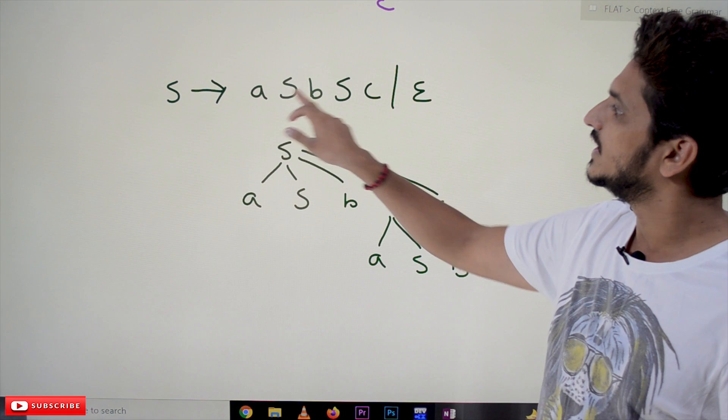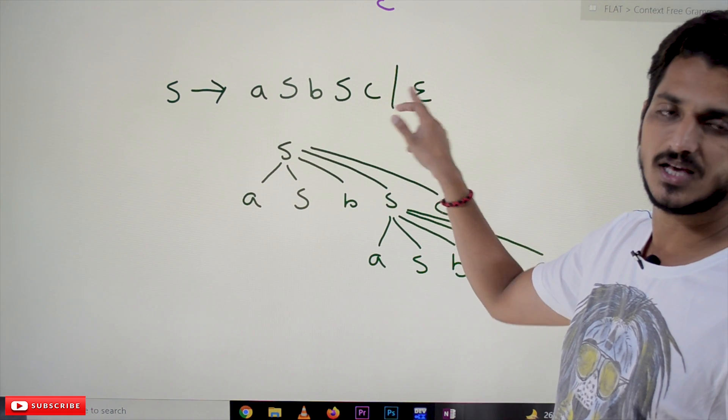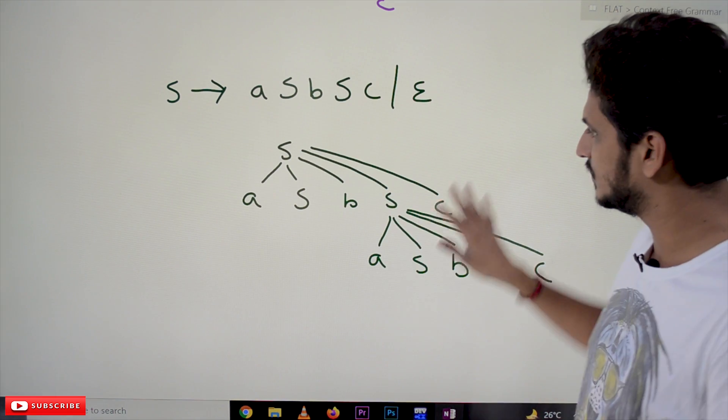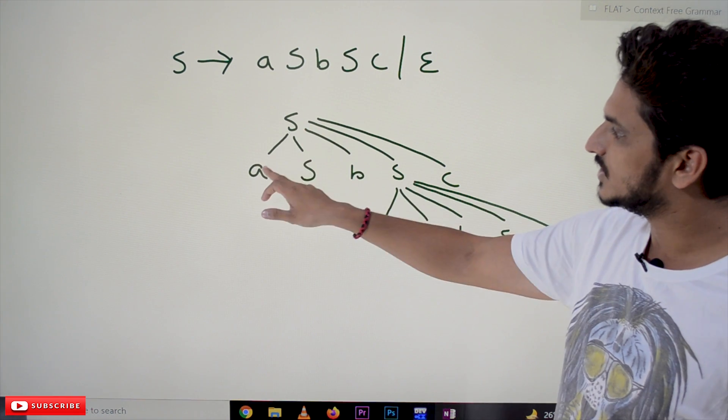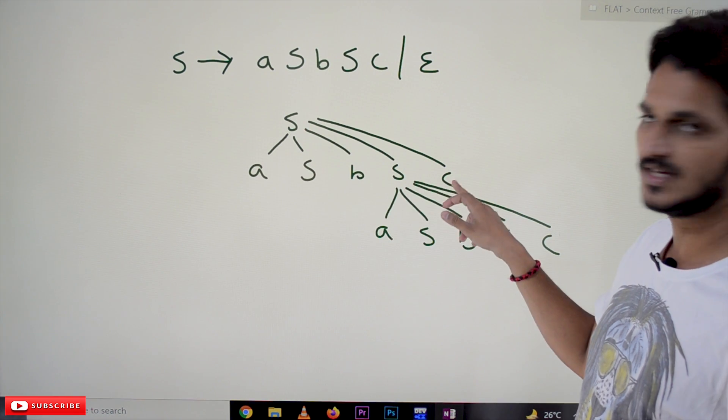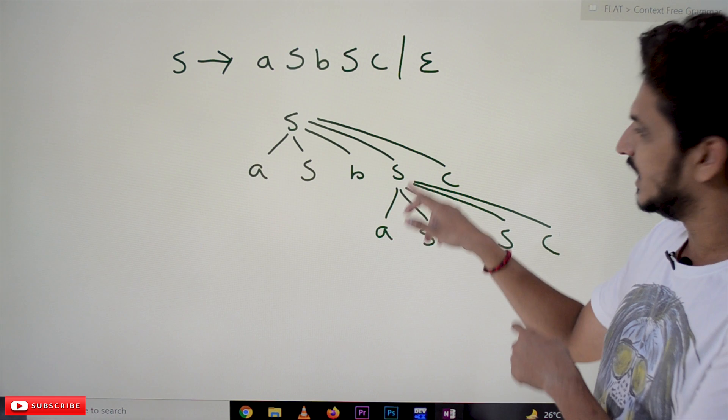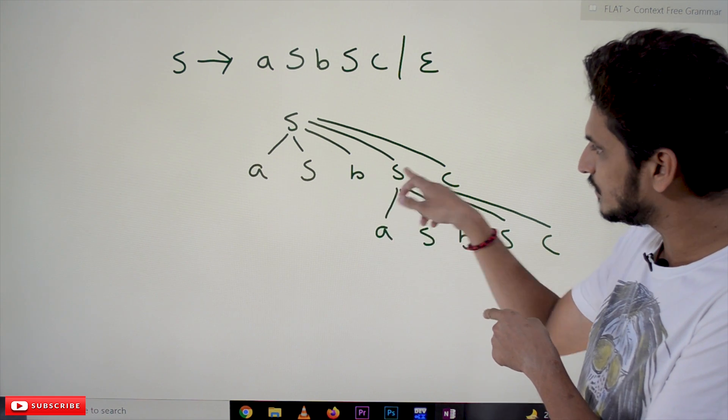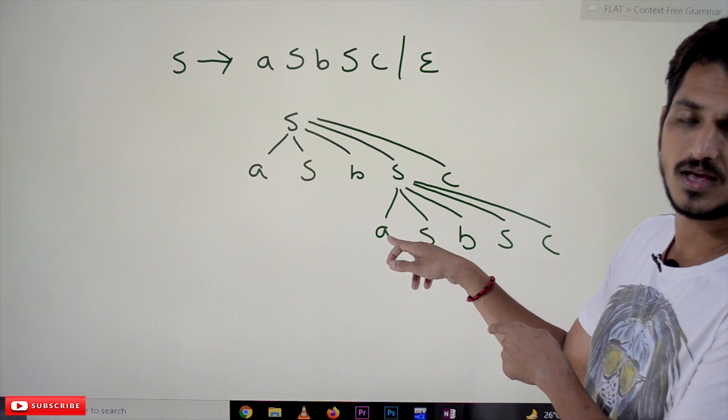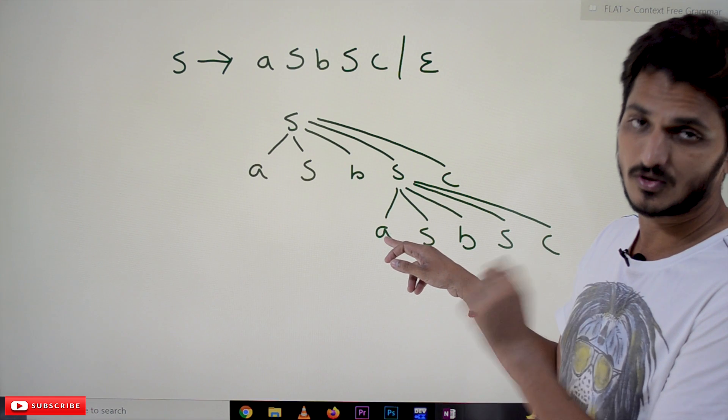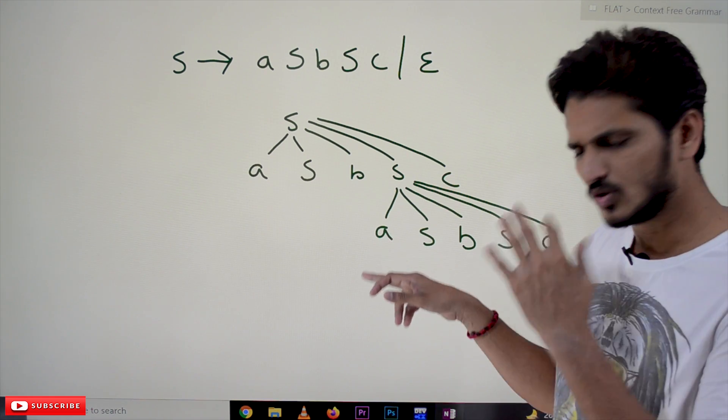But this is not possible for three situations. So S tends to—we may think that we can write a context-free grammar like this: S tends to aSbSc or epsilon, but this is not possible. Why is it not possible? S tends to aSbSc. If you expand S again, it will start from a, means after b we are going to check a, which is not correct in our situation.